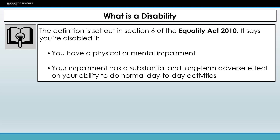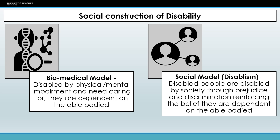It's quite a broad definition given by the Equalities Act, and the act itself does go into more detail on what would be considered a disability compared to what is not. But it does go to show that there is a social construction of disability, and there are two key models of this social construction — the first being the biomedical model, which describes disability as a physical or mental impairment.